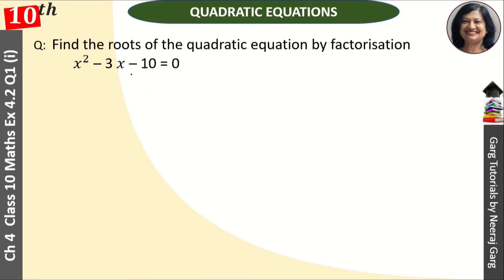The equation given is factored by splitting the middle term. 10 is made of factors 5 and 2. How much is 5 minus 2? 3. Minus 3 is here, so minus 5 and plus 2.